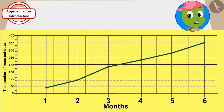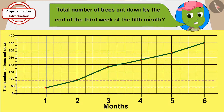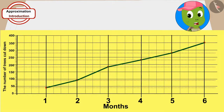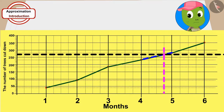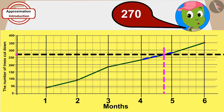How do I estimate the total number of trees cut down by the end of the third week of the fifth month? I will connect the points of the fourth and fifth months in a straight line. In this way, where the vertical line of the third week of the fifth month meets with this line, from that point I can approximate how many trees will be cut in total by the end of the third week. This point is at 270, so by the end of the third week of the fifth month, a total of 270 trees were cut.